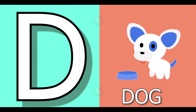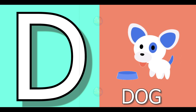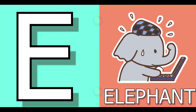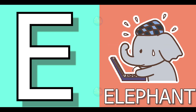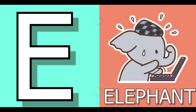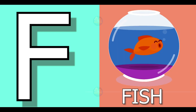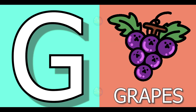D for dog, dog means kutta. E for elephant, elephant means hati. F for fish, fish means machli. G for grapes, grapes means anggur.